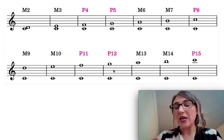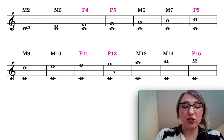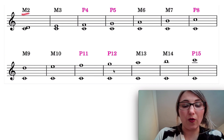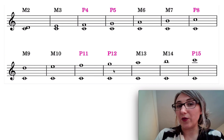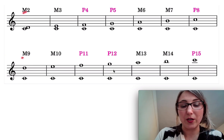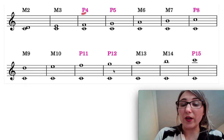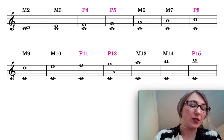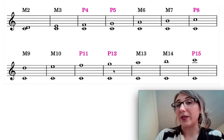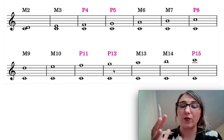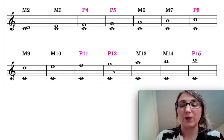One thing you notice between each of the compound and simple variants is that the qualities are all the same. If it's a major interval when it's simple, it's major when it's compound. If it's perfect, the compound version is also perfect. This applies to diminished and augmented intervals too — the quality is always exactly the same.